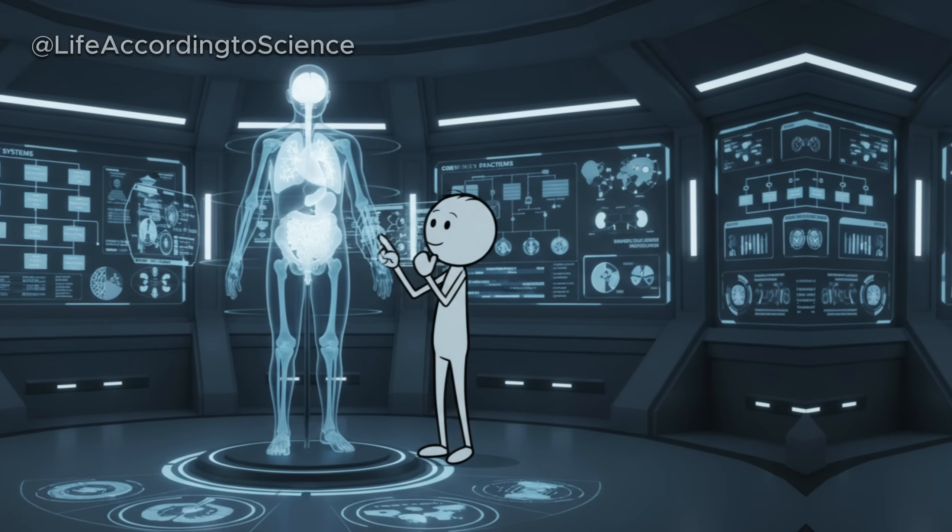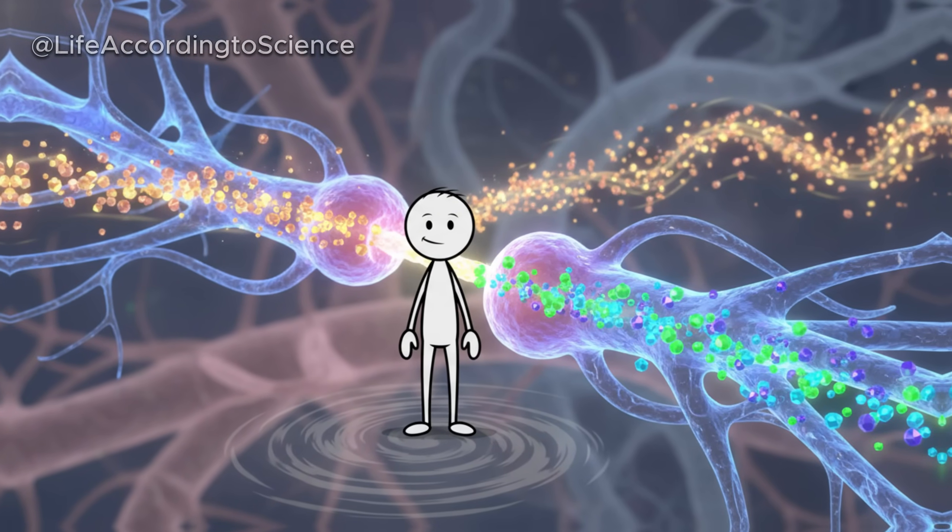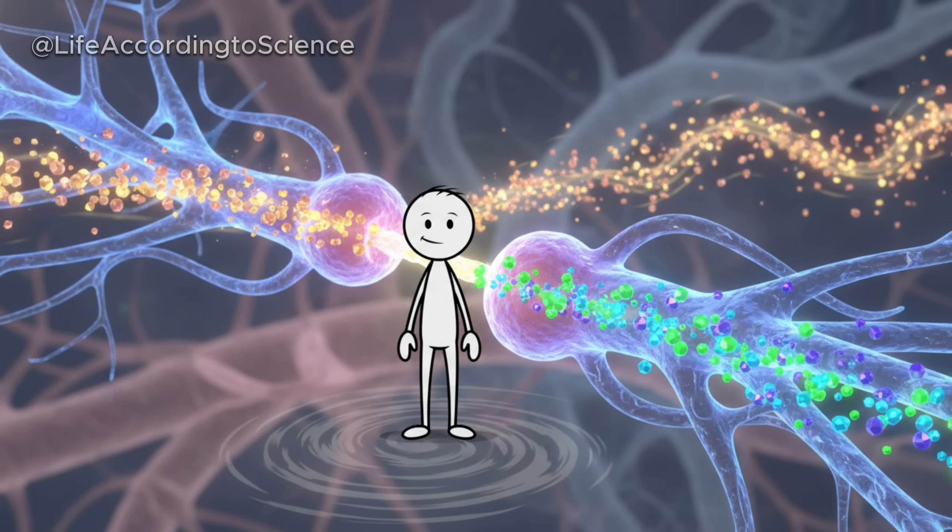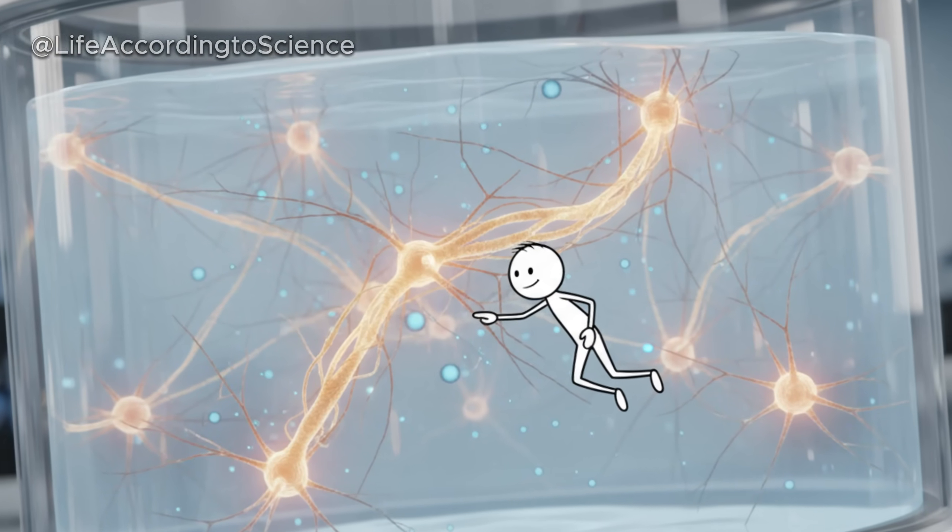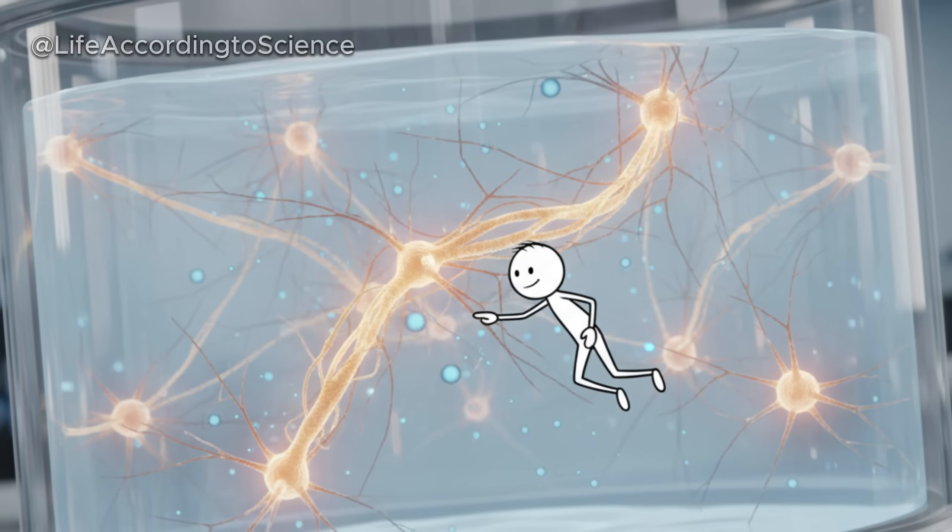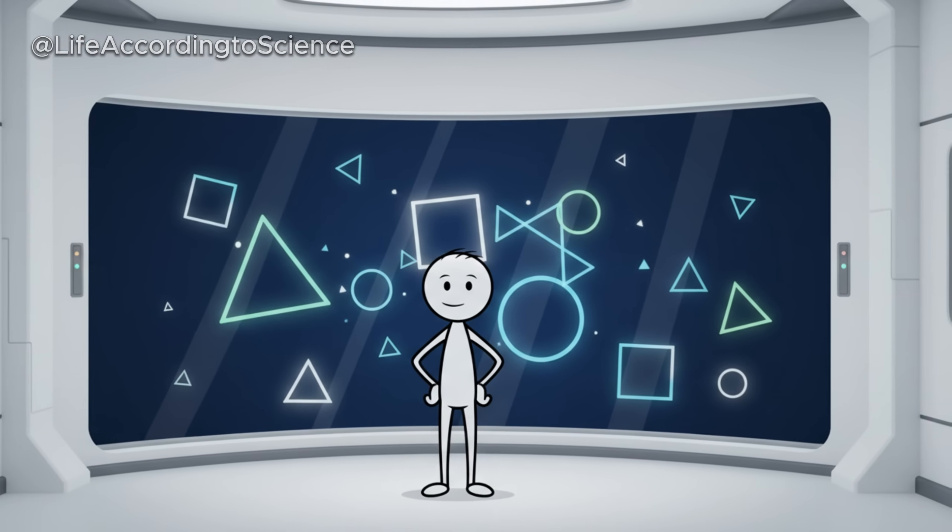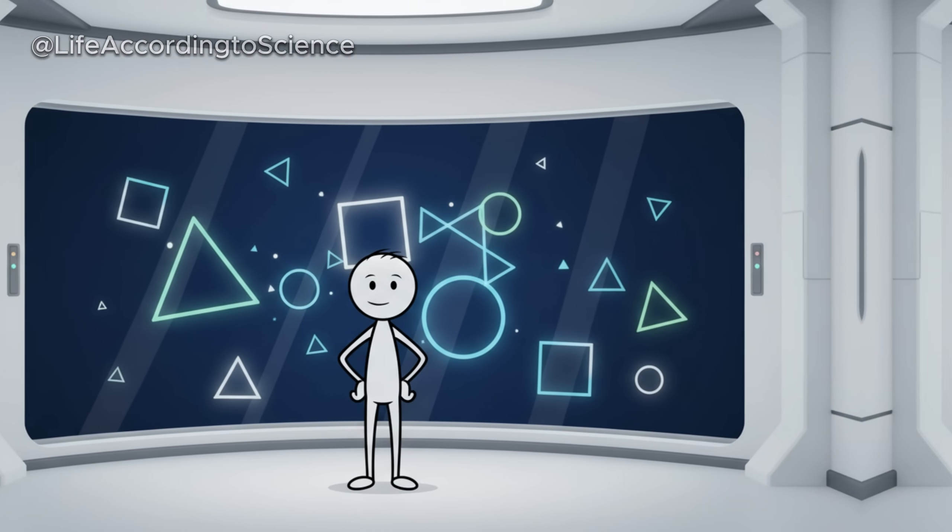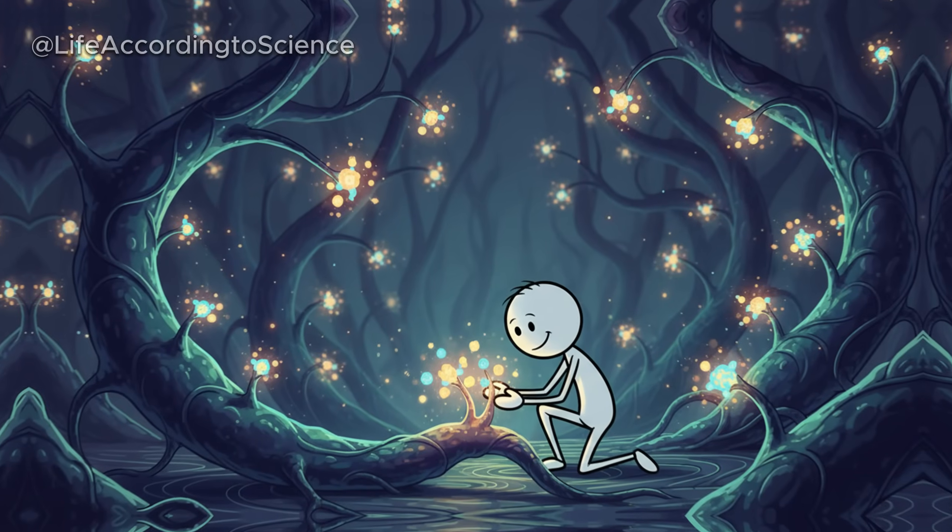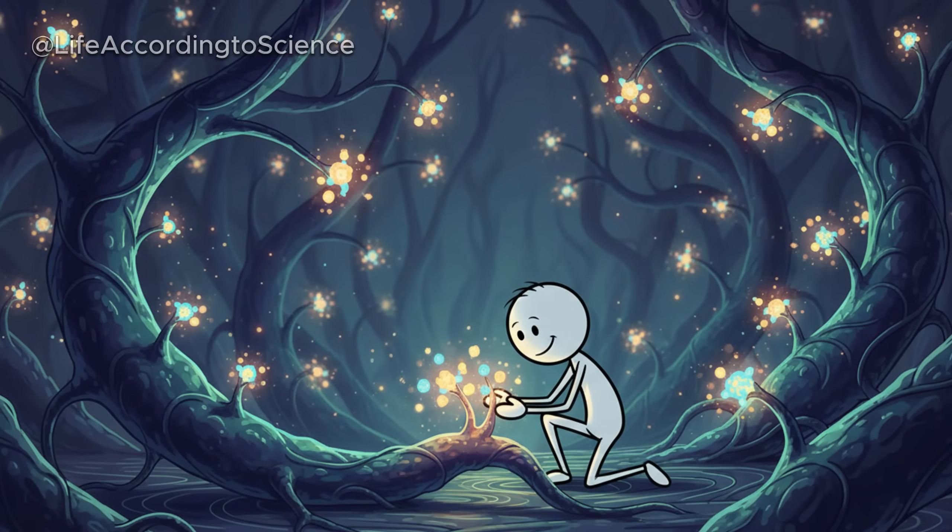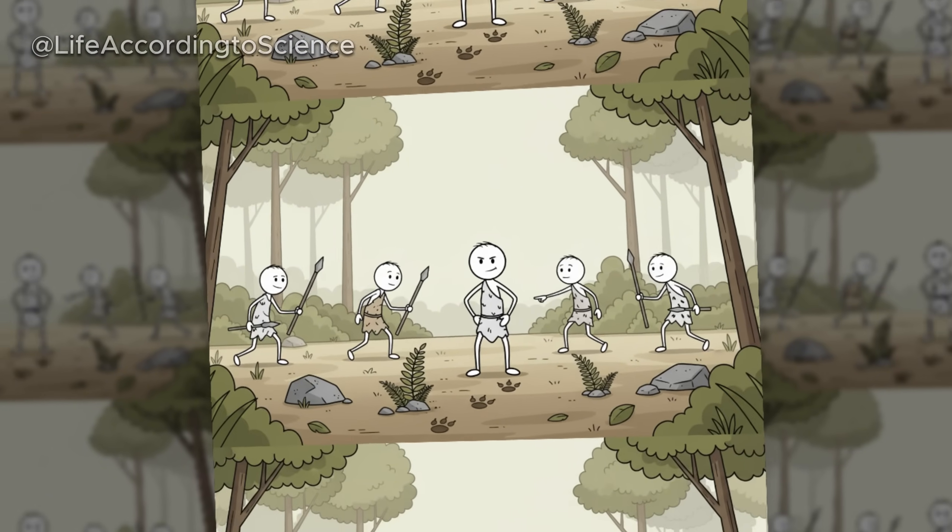When you stop eating, your brain doesn't simply slow down, it transforms the way it operates. Normally dependent on glucose, the brain starts learning to use ketones as its main fuel source after a few days of fasting. This shift not only keeps neurons firing, but also activates pathways that protect brain cells from oxidative stress and inflammation. Many people report a sense of heightened mental clarity during prolonged fasting. In evolutionary terms, this makes perfect sense. Our ancestors needed to stay sharp and alert while hunting for food during times of scarcity.